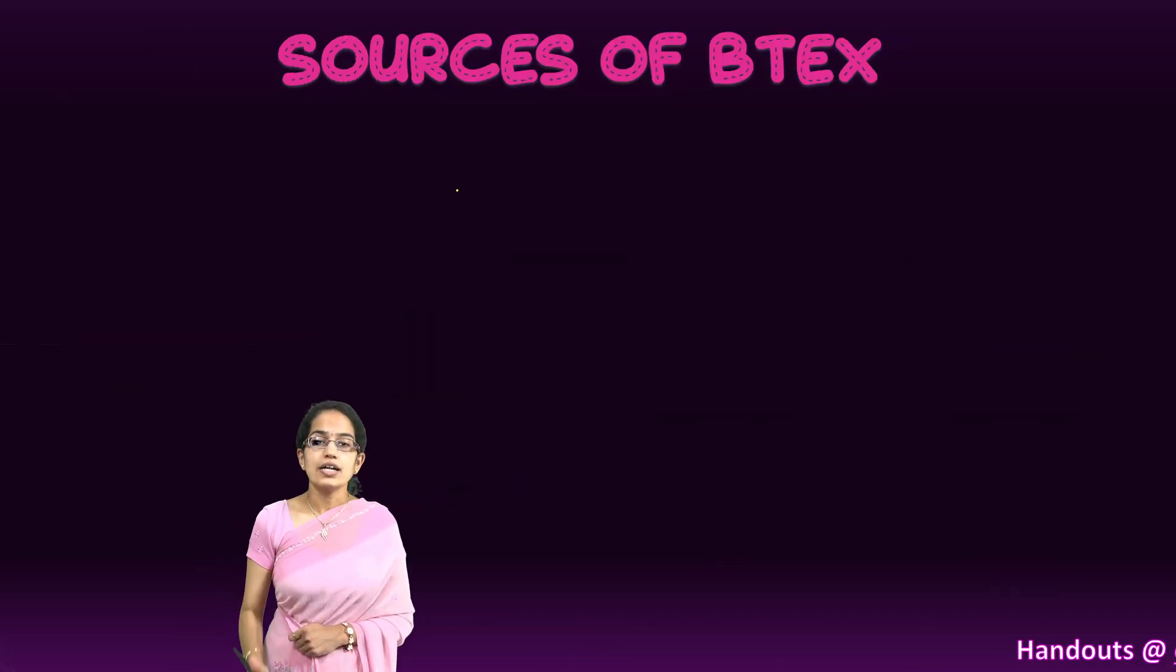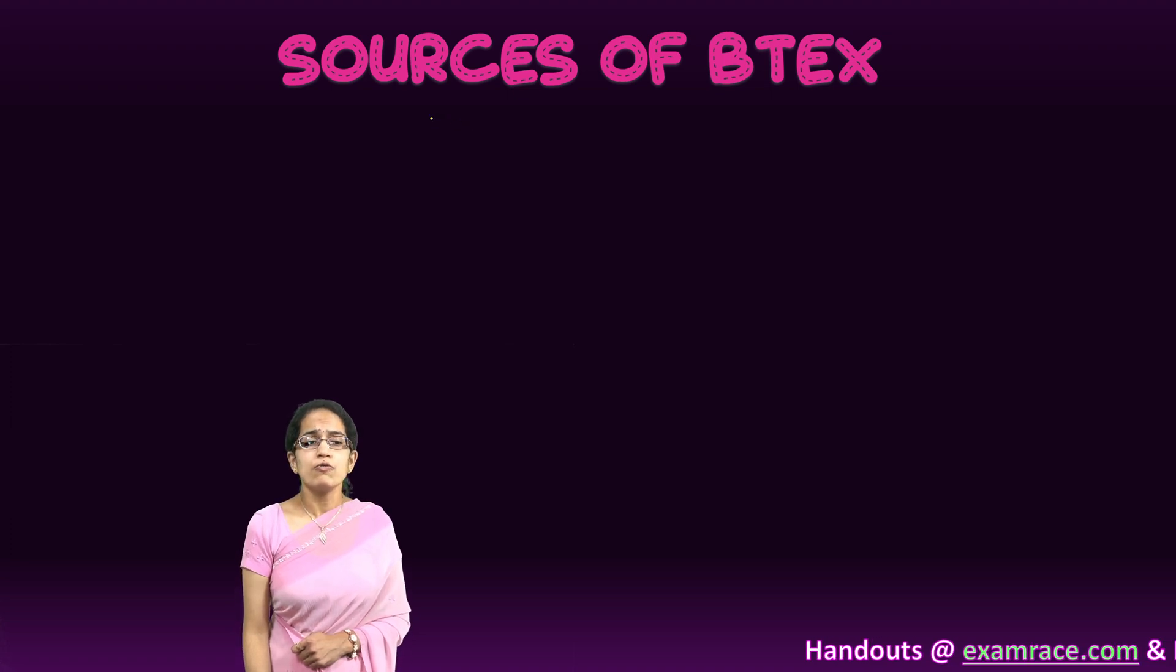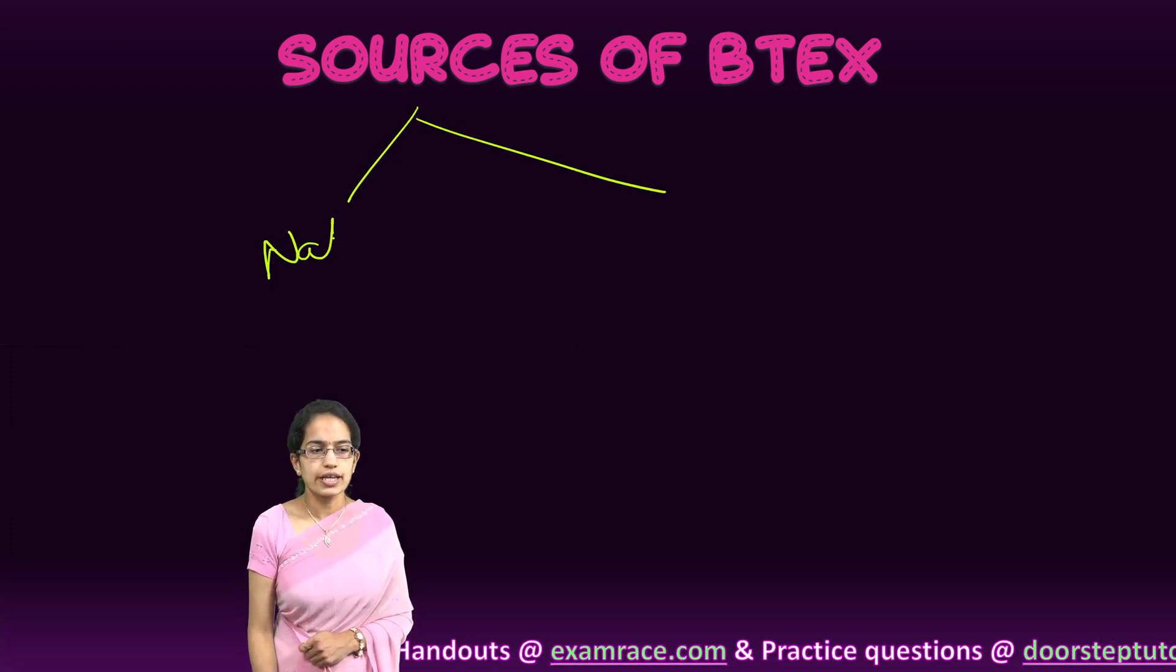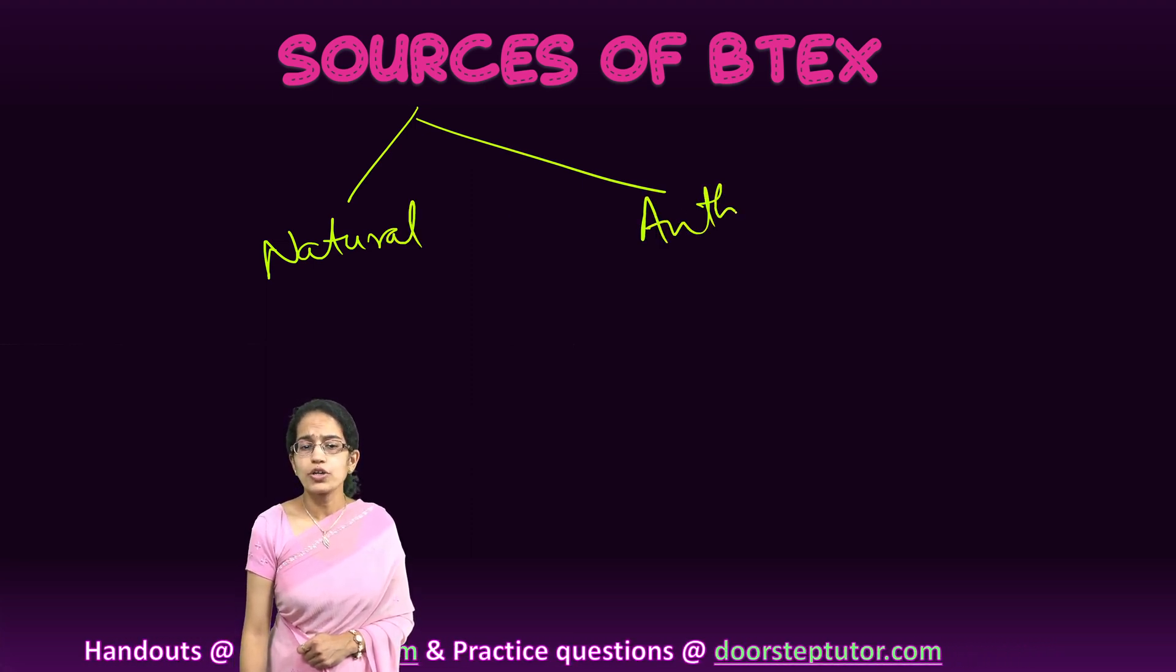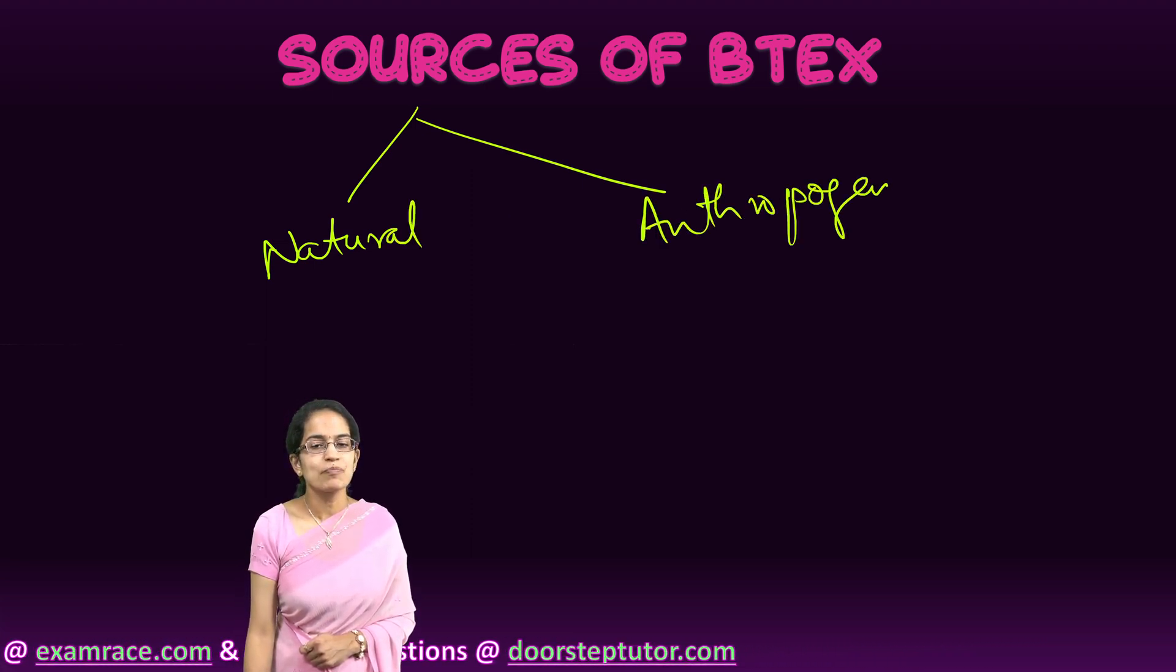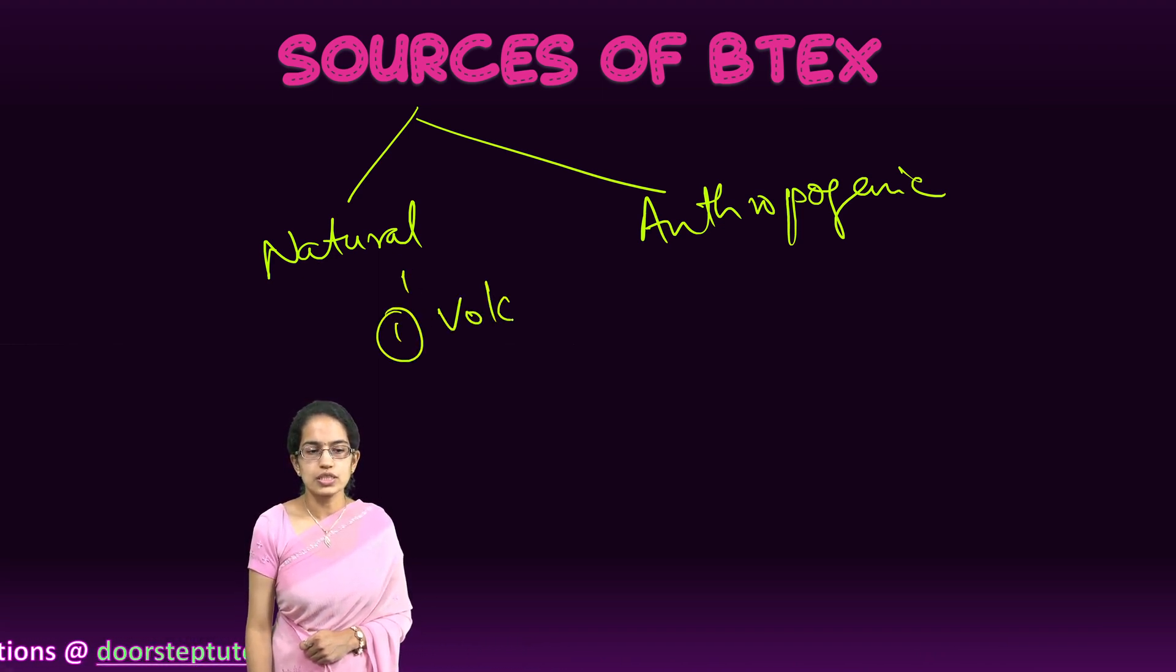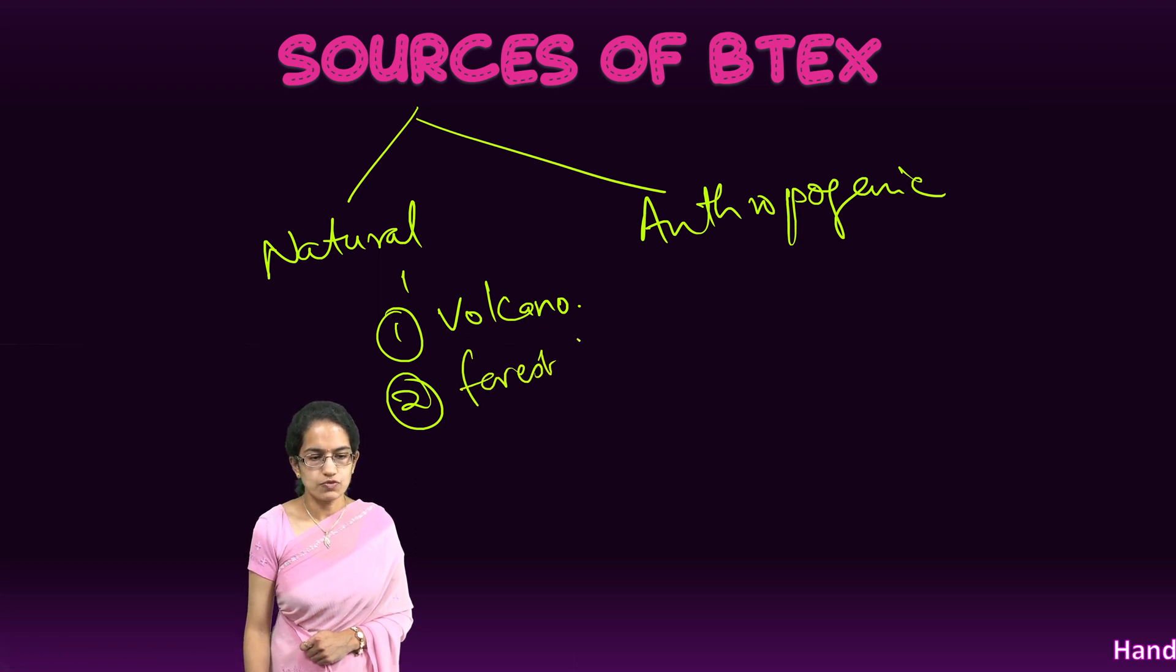What are the sources of BTEX? When we talk about sources there are numerous sources. These sources can either be natural or anthropogenic, or human-induced sources. When it comes to natural sources, two of the most important sources are volcanic sources and forest fires.